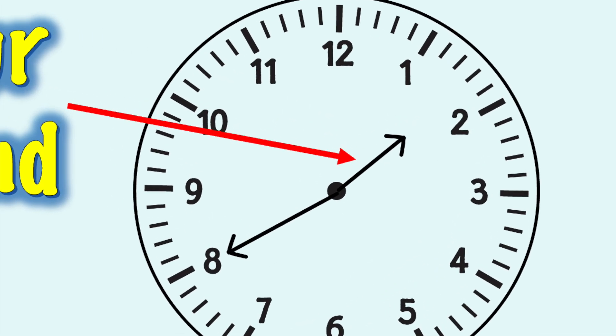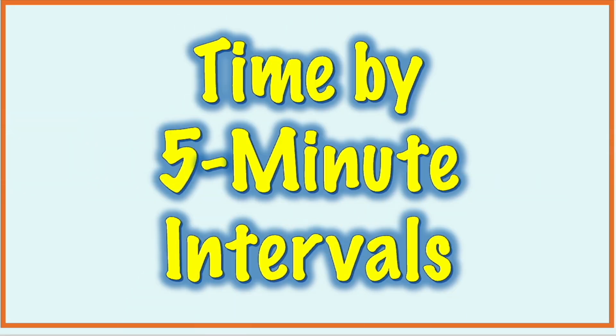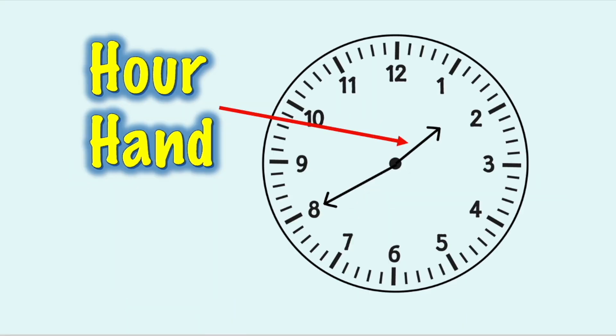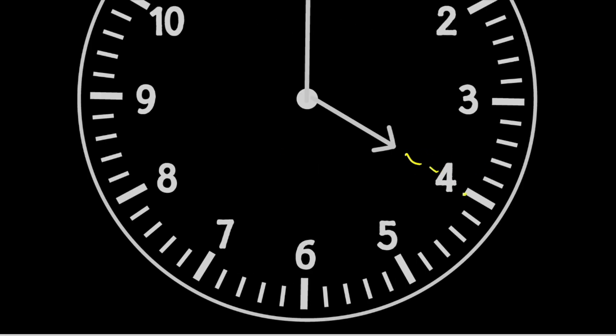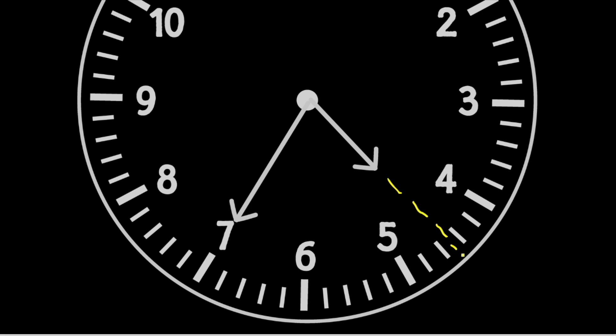When we tell time by five-minute intervals, we start with the hour hand. If the hour hand is exactly on a number, that's the hour. If the hour hand is past one number but not on the next one, we use the earlier hour — we round down to the earlier hour.